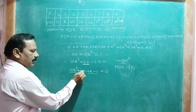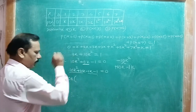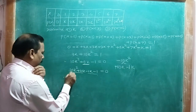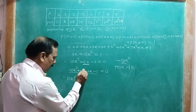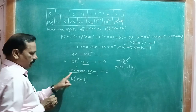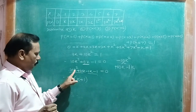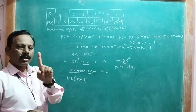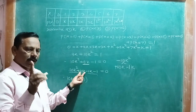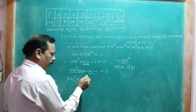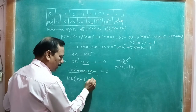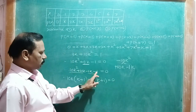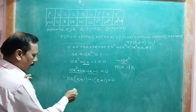Taking 10k as common from the first two terms gives 10k(k + 1), and taking -1 as common from the last two terms gives -1(k + 1). So the factored form is (10k - 1)(k + 1) = 0.